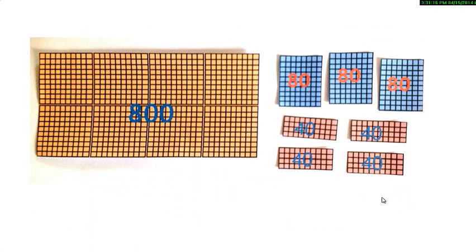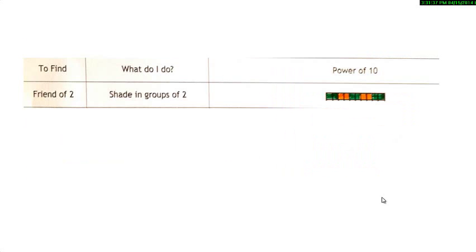You will use your number grid and tiles to find the friends of 2, 4, and 8. That is, the numbers by which you can multiply 2, 4, or 8 to get the answer as a power of 10. To find the friend of 2, shade the row of 10 squares into groups of 2. You will get 5 groups of 2.